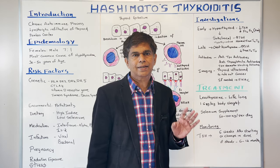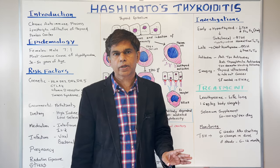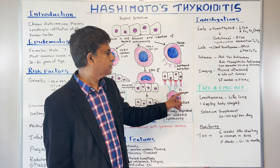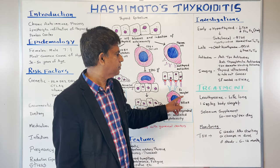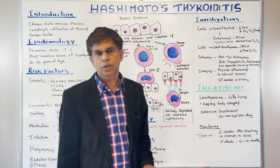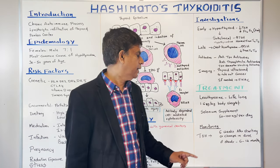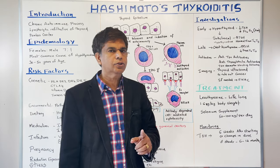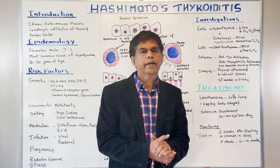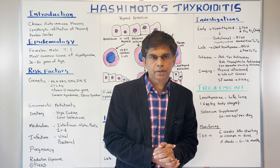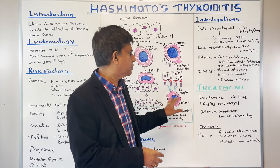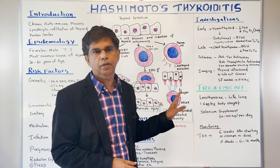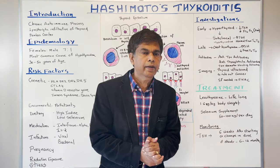There are also TSH receptor blocking antibodies. These go through the receptor pathway and activate natural killer cells, leading to antibody-dependent cell-mediated cytotoxicity and cell death. That is the pathophysiology in a nutshell.